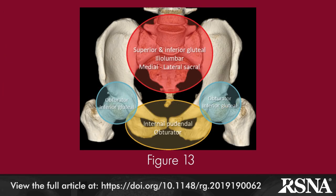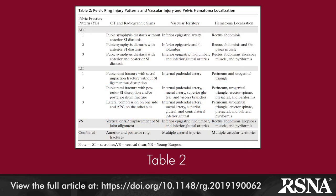Figure 13 in the article summarizes these fracture sites and resulting arterial bleeding sources. Table 2 provides a summary of pelvic fracture patterns, the CT and radiographic findings associated with each pattern, the vascular territory involved, and the location of the resultant hematoma.